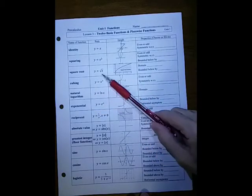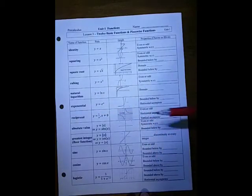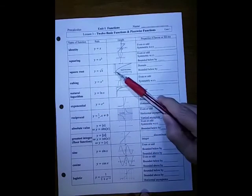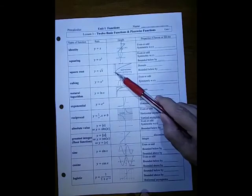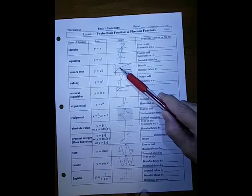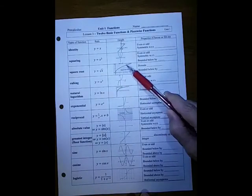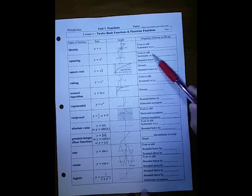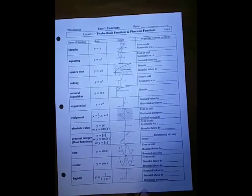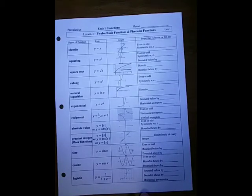The square root function, y equals the square root of x, starts at 0, goes through (1,1), goes through (4,2), and keeps going up. What is the domain of that function? What's it bounded below by?